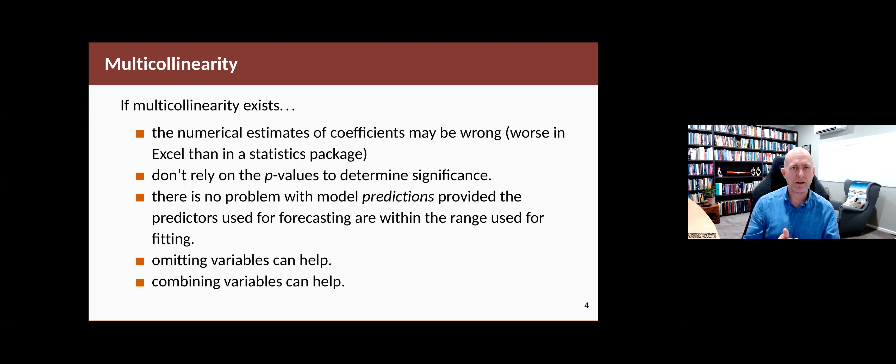But if your future value is outside the range 0 to 100 or whatever the historical range of the predictor is, then the forecast can become quite unreliable.